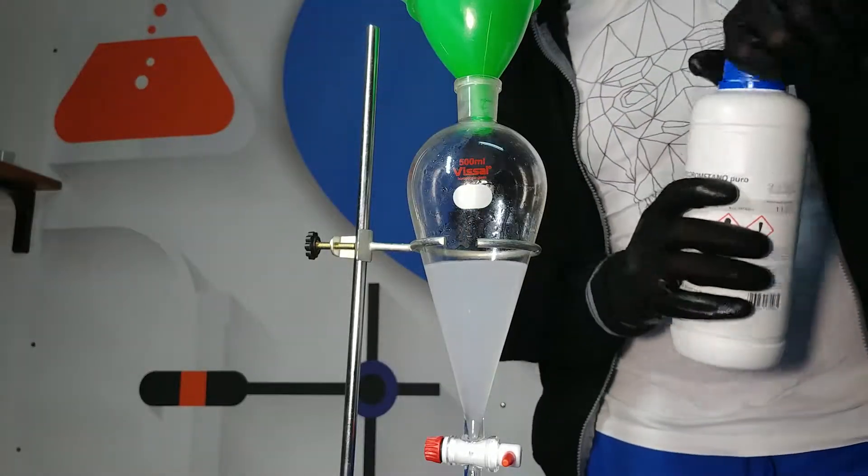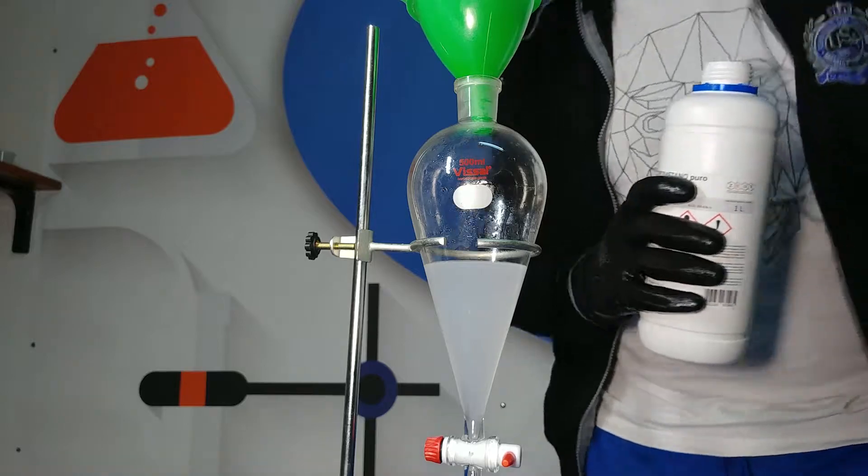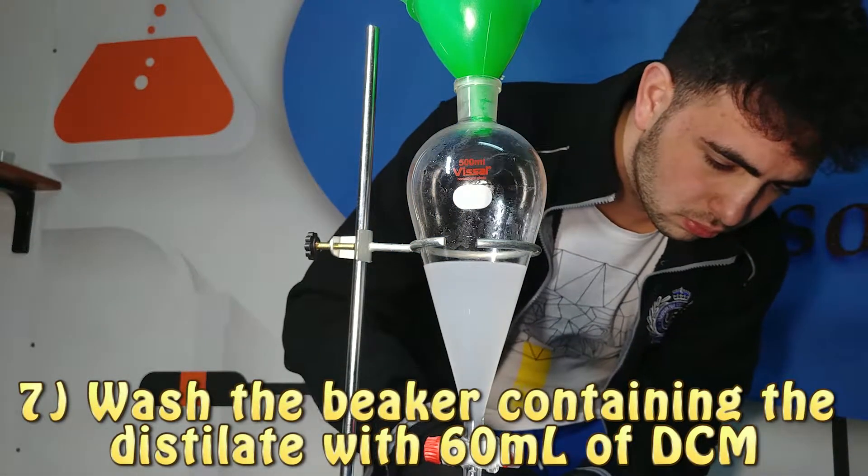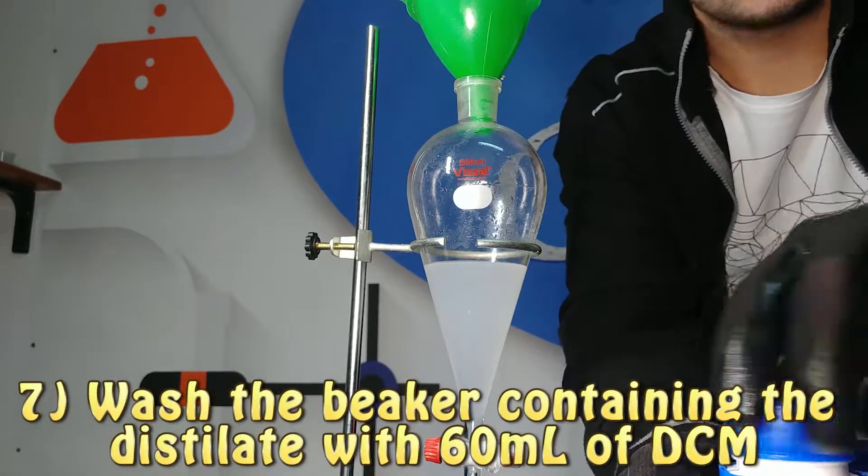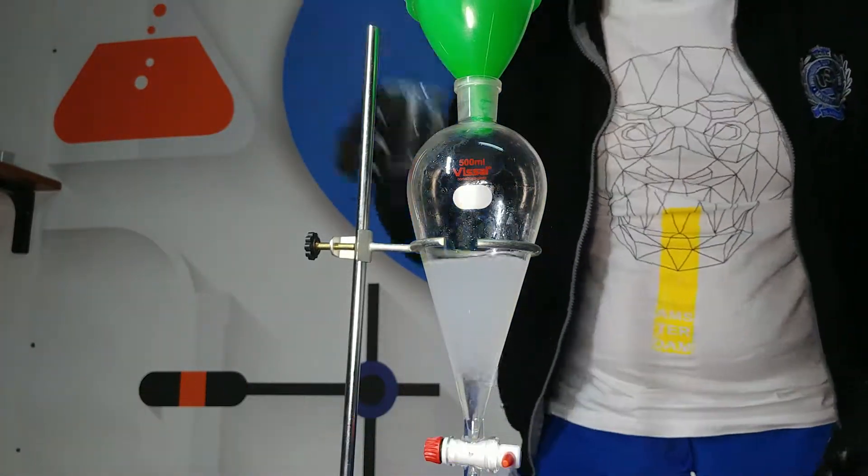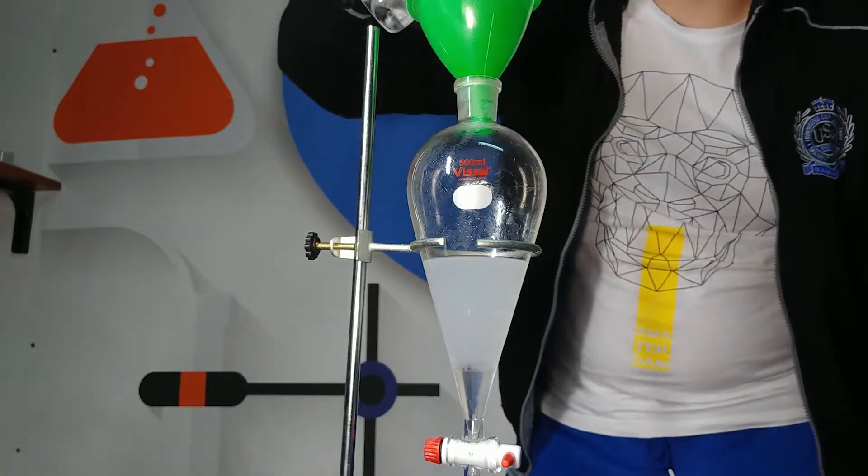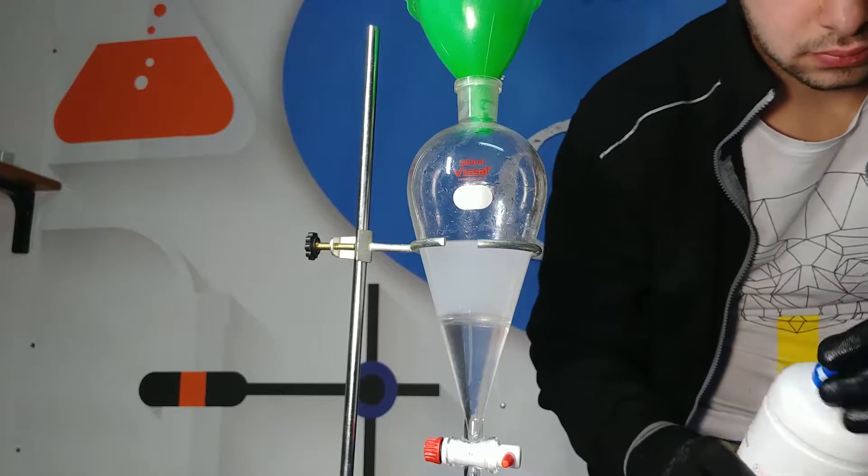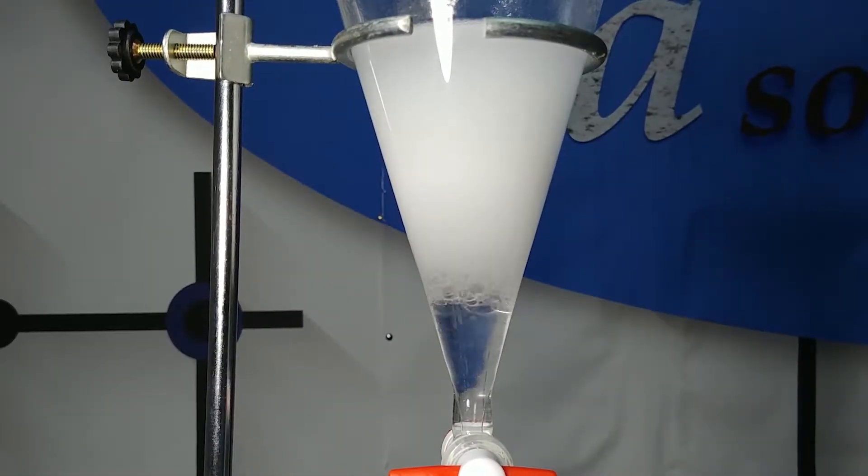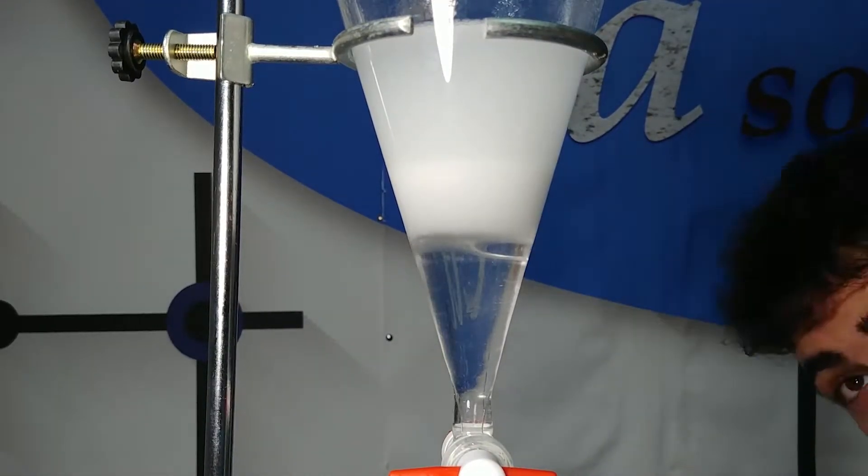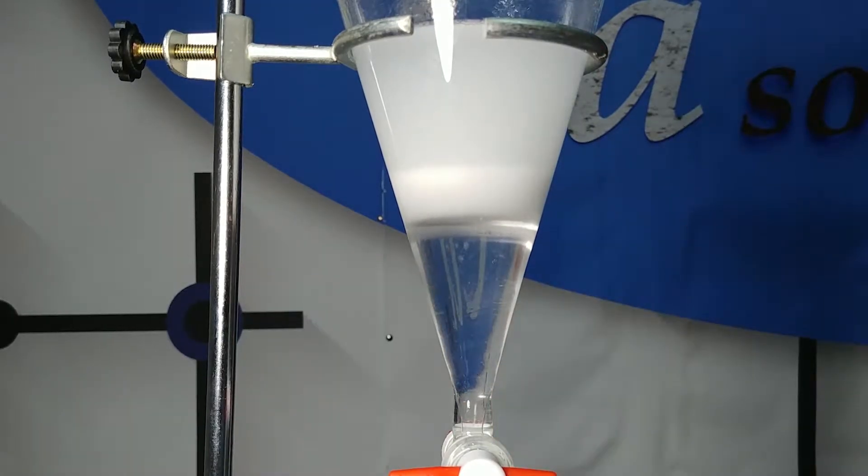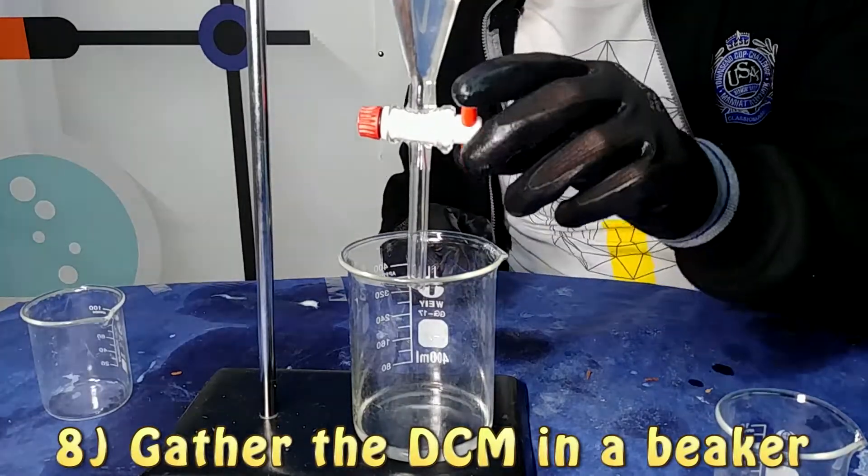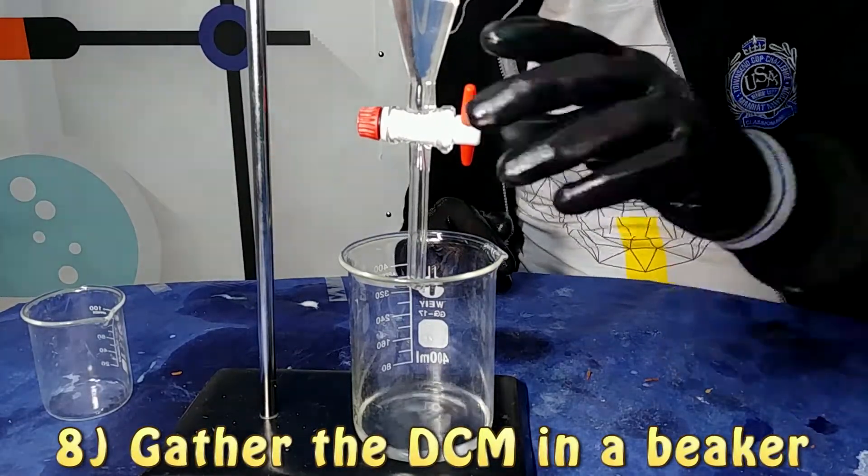We are going to put our solution into a separatory funnel. We are going to add 60 ml of dichloromethane and wash it with that and pour this dichloromethane into our separatory funnel. Then we are going to mix these solutions a bit and we are going to put away our dichloromethane.